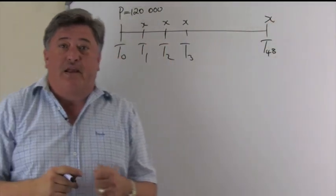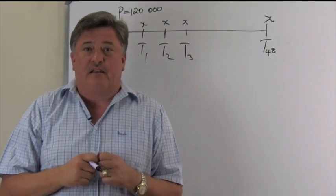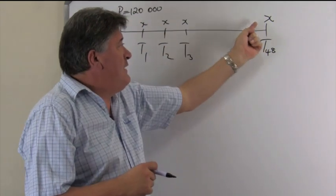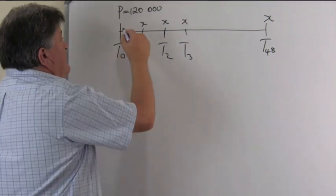So, she's going to make those payments. And the question is, what is this monthly payment? So, the loan is 120,000, the monthly payments X, of 48 months, because we start one month after the granting of the loan.